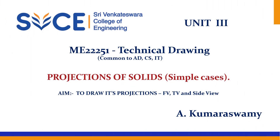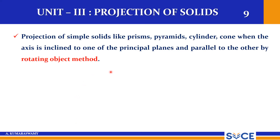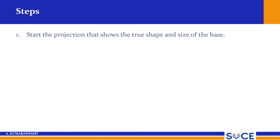Students, in last session we have seen the introduction about solids as part of our third unit. Now we will see problems on simple cases, how to solve different varieties of problems. The first three cases in solids we will see here, and when the solid axis is inclined, that we will see in the next session. The content of unit three covers projection of solids like prisms, pyramids, cylinders, cones, and when the axis is inclined to one of the principal planes and parallel to the other by the rotating object method.